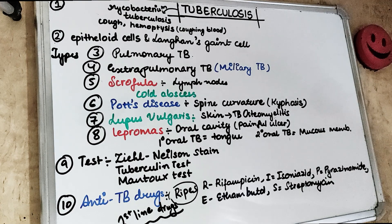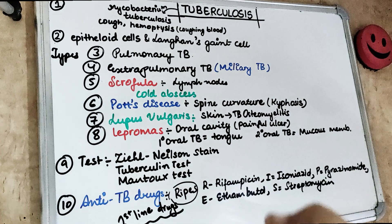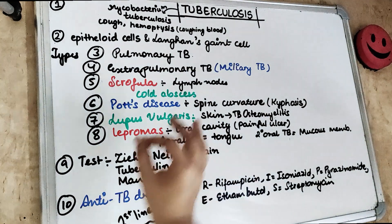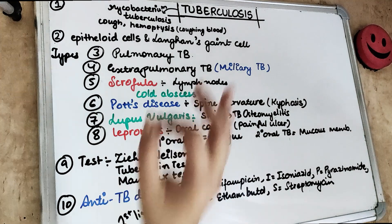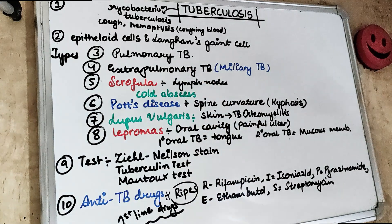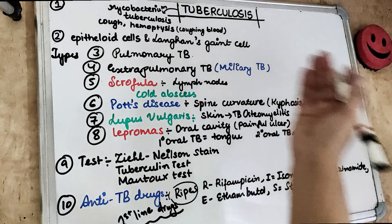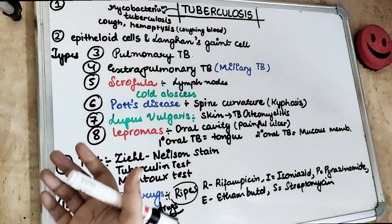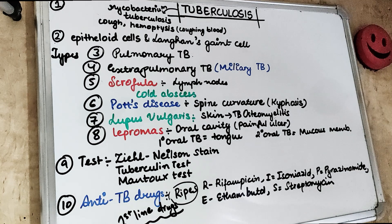Welcome back to another 10 in 10 series where we cover each topic under 10 headings in 10 minutes. Today's topic is tuberculosis. Tuberculosis is due to Mycobacterium tuberculosis or rarely due to Mycobacterium bovis. Historically, many patients used to die from TB as there was no treatment, and patients suffered from cough and hemoptysis.